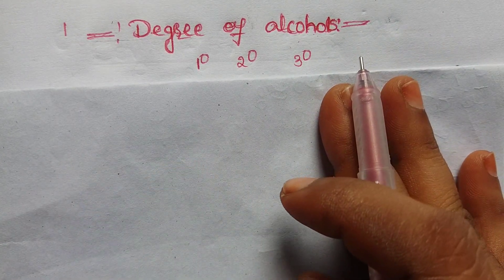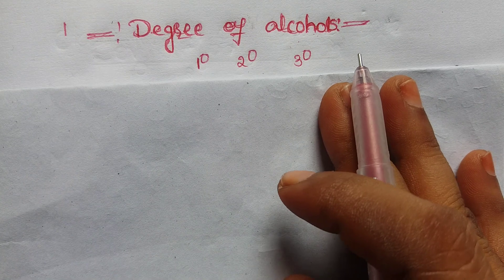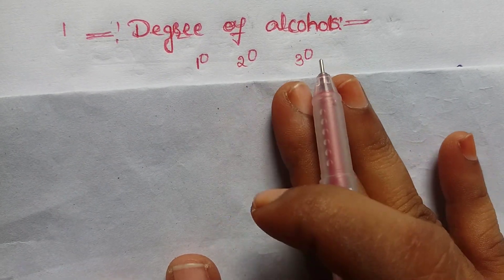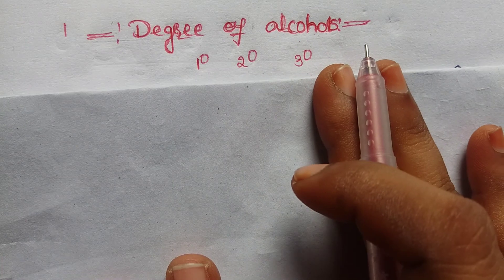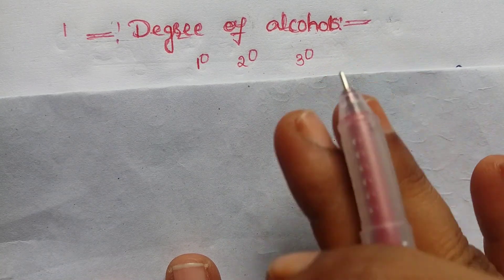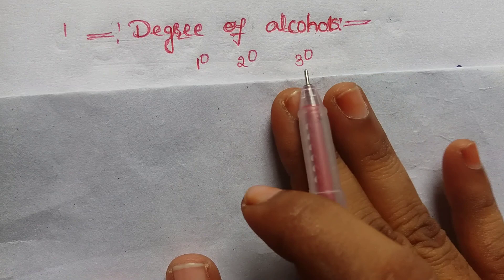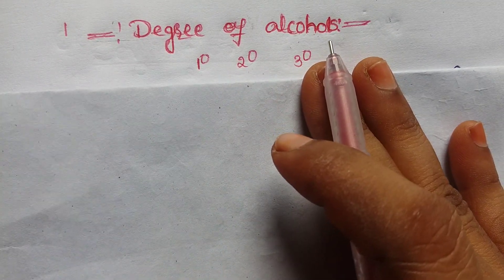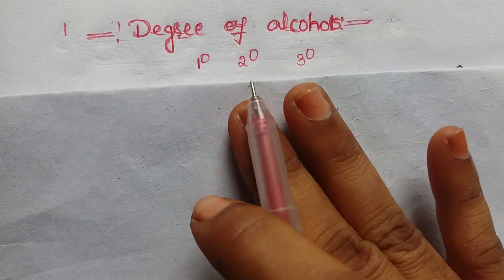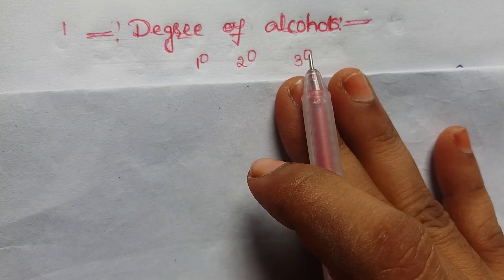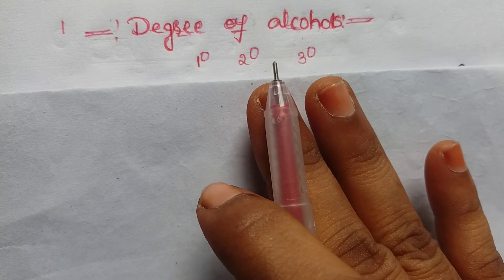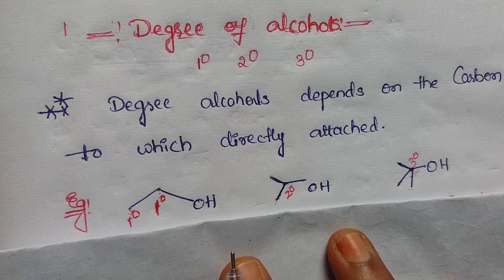If you know the identification of degree of carbons, then the identification of degree of alcohols is very easy in any given compound in competitive exams. Because the degree of alcohols depends upon the degree of the carbon to which the OH group is directly attached. So let us start with what are primary, secondary, and tertiary alcohols.